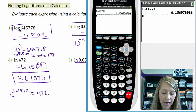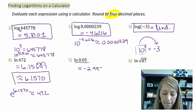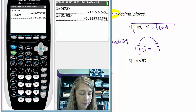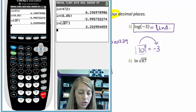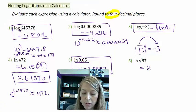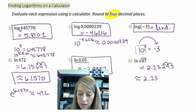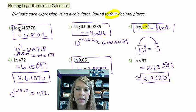LN of 0.05 gives approximately negative 2.9957. For the natural log of the square root of 87, I type LN, then square root, then 87, close the square root, close the natural log, and get approximately 2.23295. Rounded to four decimal places, that's 2.2330. These are as easy as just typing them into the calculator — but note we cannot take a log of a negative number.